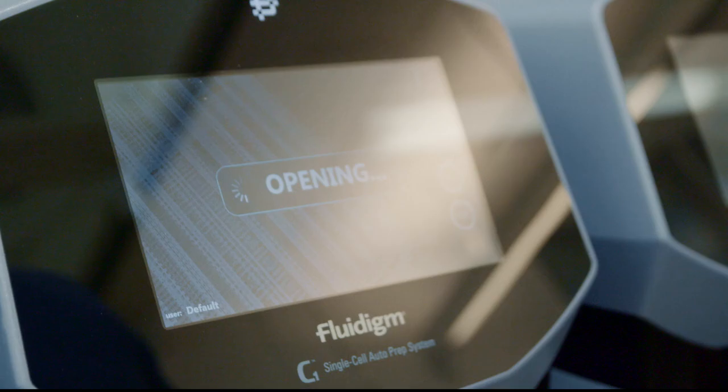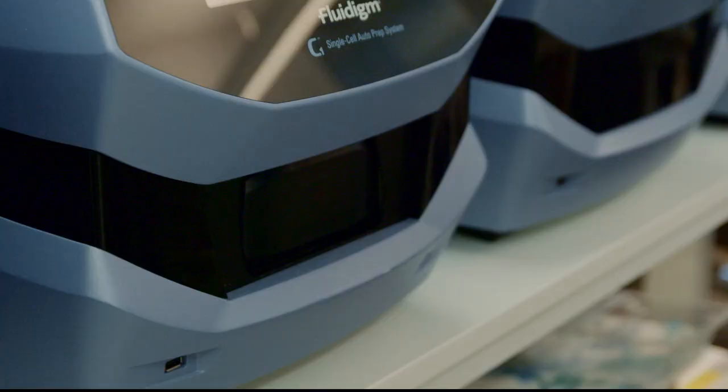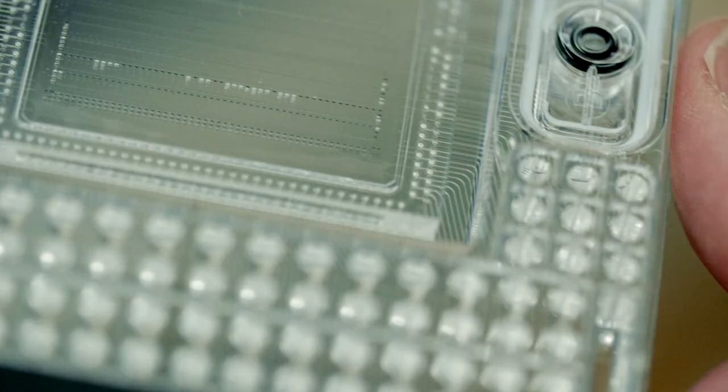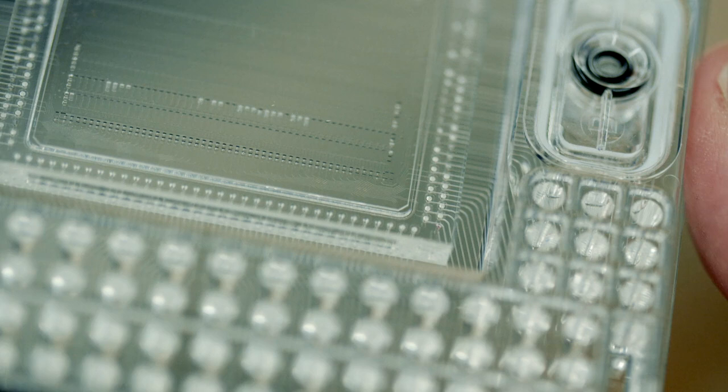But now, new opportunities have opened up. A new technology that uses a so-called microfluidic chip, which gives scientists the opportunity to study single cells. So these are microfluidic plates that we use for analyzing DNA from single cells. The technology enables researchers to learn how each individual cell uses its DNA code. And that can reveal new cell types.